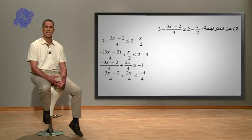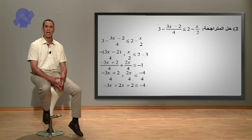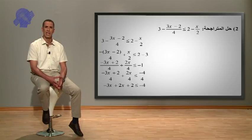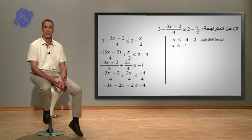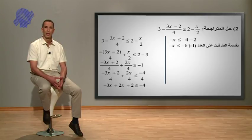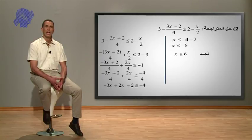لتوحيد طرفي المتراجحة تصبح: ناقص 3x زائد 2x زائد 2 على أربعة أصغر من أو تساوي ناقص 4 على أربعة. مقام الطرفين هو نفسه، إذن نحل متراجحة البسطين: ناقص 3x زائد 2x زائد 2 أصغر من أو تساوي ناقص 4. إذن ناقص x أصغر من أو تساوي ناقص 4 ناقص 2، ومنه ناقص x أصغر من أو تساوي ناقص 6.